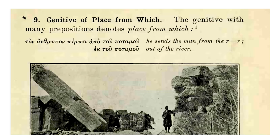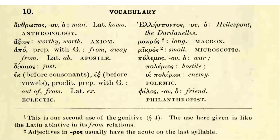Another example of the genitive used to determine the place from which something occurred uses the preposition 'ek,' which is more literally 'out of' rather than just 'from,' as would be the case with 'apo.' Now we'll consider some vocabulary. Many of these words you're probably quite familiar with through their English derivatives. First, 'anthropos,' which means man — we know words like 'anthropology,' the study of man. Next, 'axios,' which is the word we get 'axiom' from — those self-evident truths within a system like mathematics which cannot be proven.